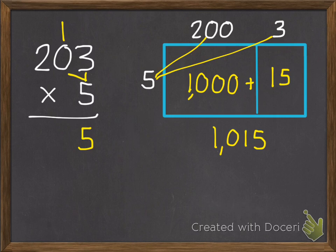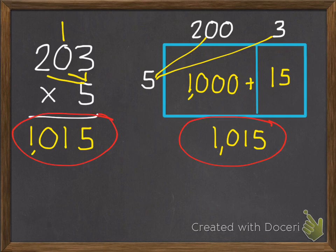We still have to add that 1, 10. So 0 plus 1 is 1. 5 times 2 is 10. So whichever strategy we use, we will get 1,015.